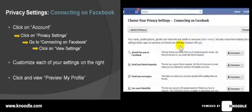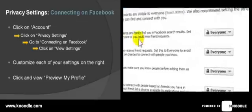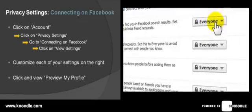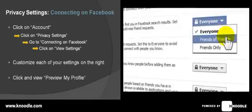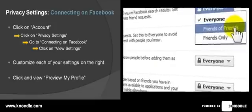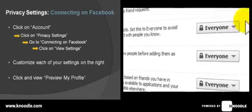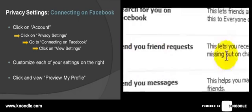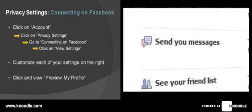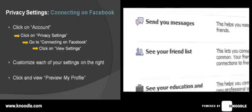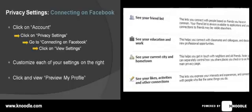This first option determines who can find you on Facebook. We want to change that from 'Everyone' — click on the 'Everyone' button and change it to 'Friends of Friends.' The next one, 'Send you friend requests,' we're going to keep that on 'Everyone.' The third one, 'Send you messages,' we're also going to keep that on 'Everyone.' The following four we're going to change to 'Friends Only.'